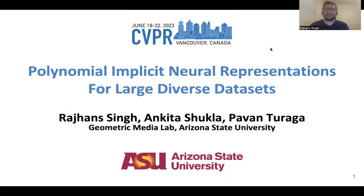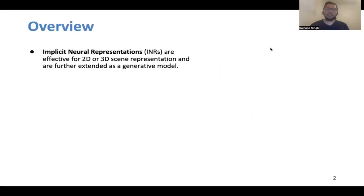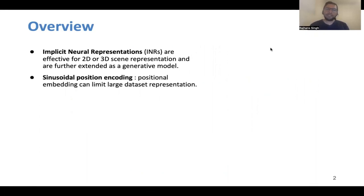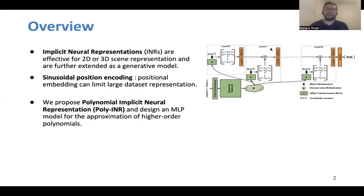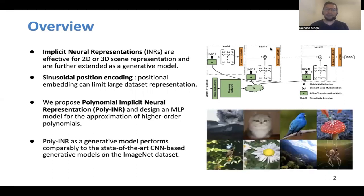My name is Rajan. I am here to present our work, Polynomial Implicit Neural Representation for large diverse dataset representation. Implicit neural representations (INR) are very effective for 2D and 3D scene representation, and have recently been extended as generative models to represent entire datasets. Most INRs generally consist of a periodic function-based positional encoding followed by a multi-layer perceptron. However, using such positional embedding spaces can be limiting for large dataset representation, mainly due to the finite nature of this embedding space. In this work, we propose a polynomial function-based INR and propose a model that can approximate higher-order polynomial degrees. Through extensive experiments on the ImageNet dataset, we validate our approach.